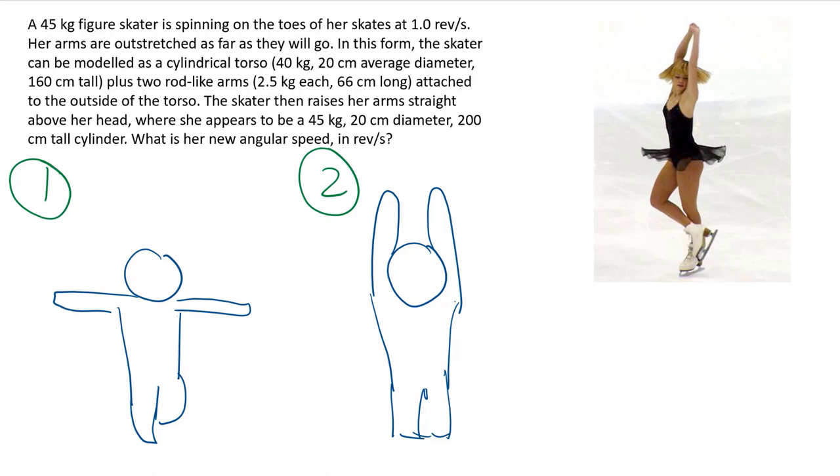So instead of this human looking shape, which our table doesn't give us, we're gonna say that this middle part here looks kind of like a single cylinder. And then each of these arms are kind of rods sticking out like that. And then afterwards, you have the arms up. So let's say it's still kind of the same size cylinder, but taller.